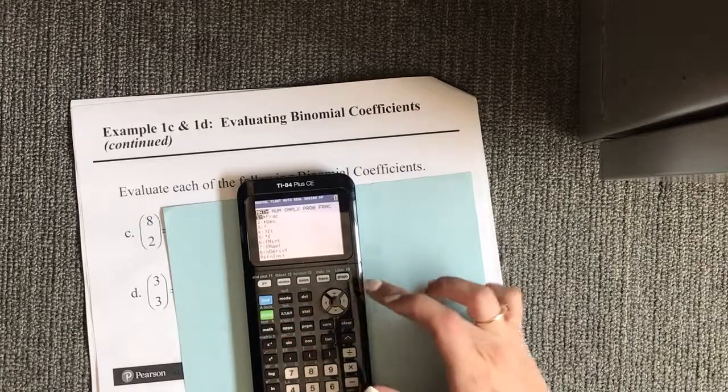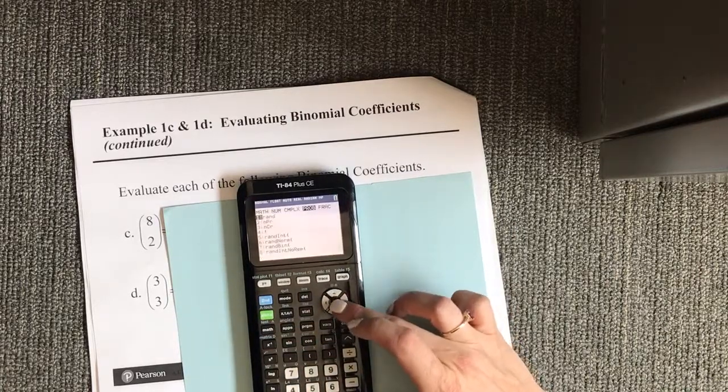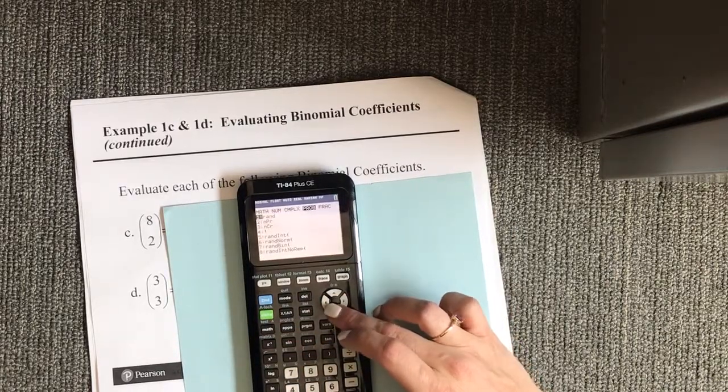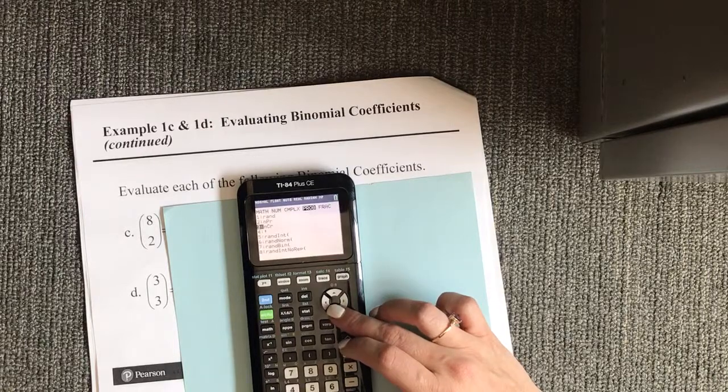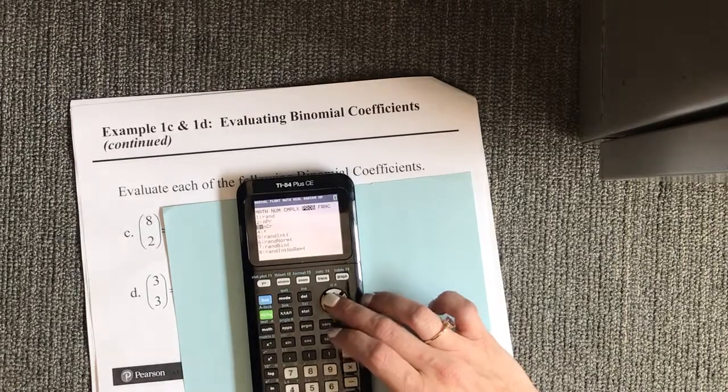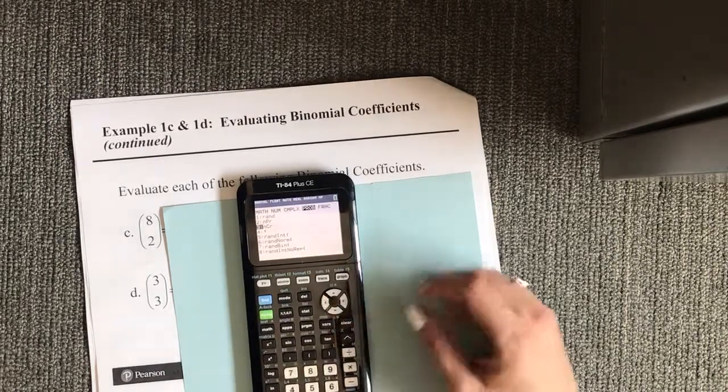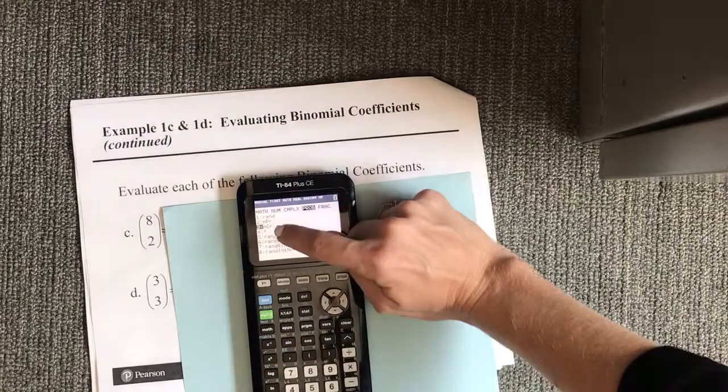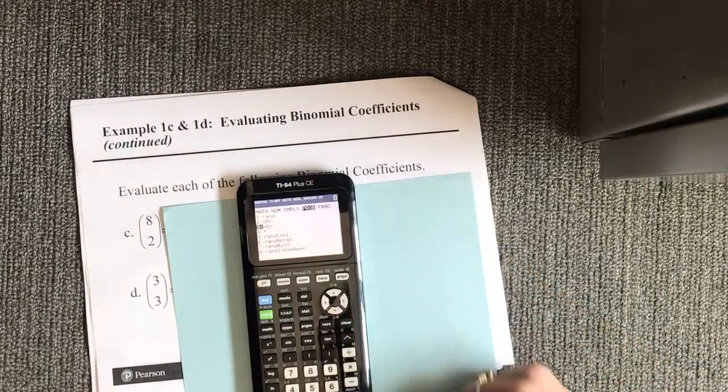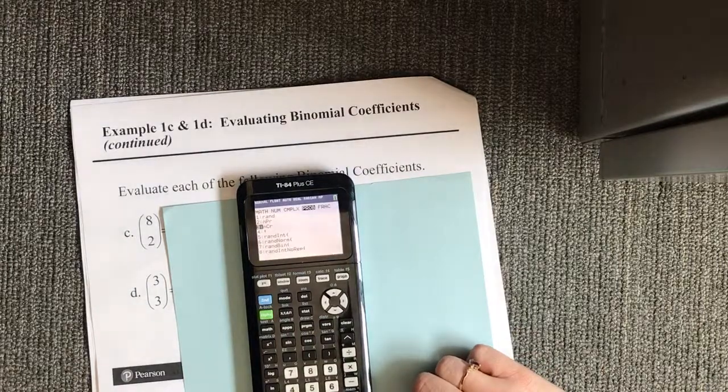It's going to be Math, arrow over to Probability, and it's number three. I know that seems random that it says NCR, but you'll learn why later in this chapter. Just know for now that this NCR function is how you do N above R in the calculator.